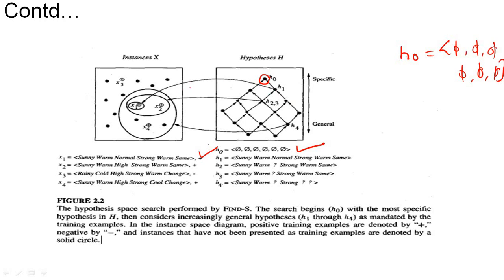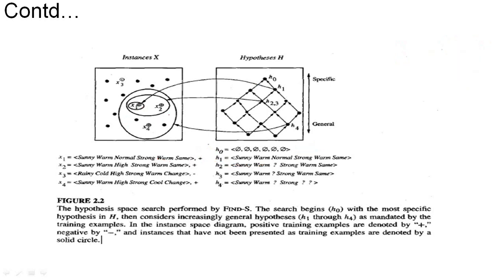H1 maps correctly to X1 since all values match. Now consider the second positive instance X2. Compare each attribute of X2 with the current hypothesis H1. First attribute: both sunny — write sunny. Second: both warm — write warm. Third: H1 has normal, X2 has high — two different values, so replace with question mark. Fourth: both strong — write strong. Fifth: both warm — write warm. Sixth: both same — write same. So H2 becomes: sunny, warm, ?, strong, warm, same.